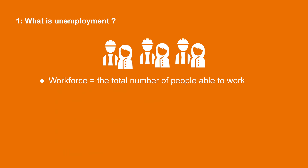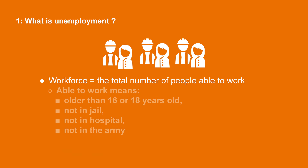What is unemployment? First, we must define the workforce. The workforce is the total number of people who are able to work. However, this does not mean everyone in society. Certain people are not able to work. For instance, children are not legally allowed to work. This means that people able to work are only those above the minimum working age, which, depending on the country, is between 16 and 18 years old.